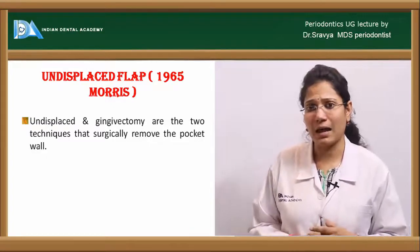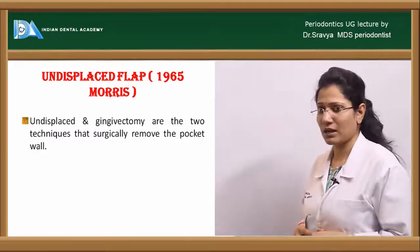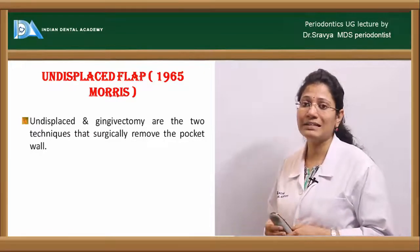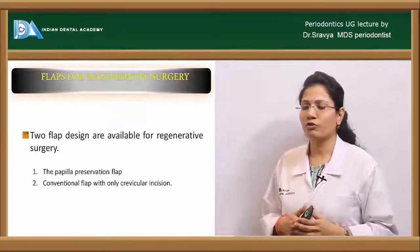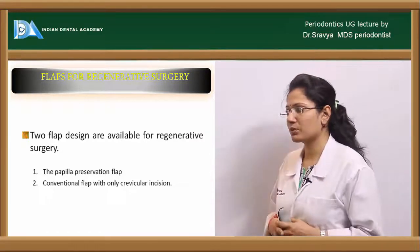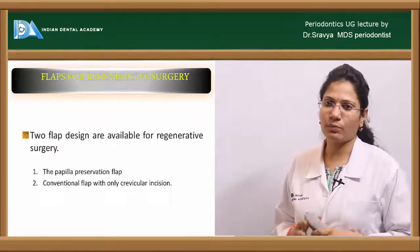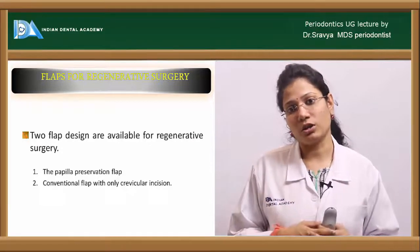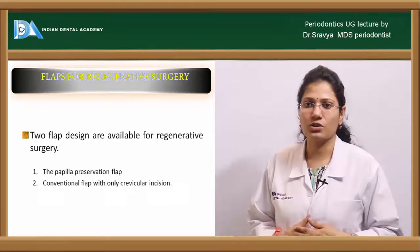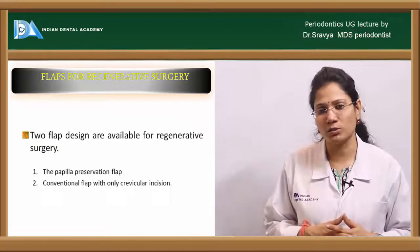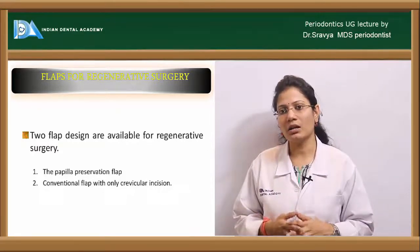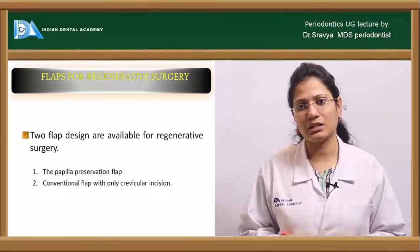The undisplaced flap was given by Morris in 1965. The undisplaced flap and gingivectomy are the two techniques that completely eliminate your pockets. For regenerative techniques, two flap designs are available: the papilla preservation flap and the conventional flap with a crevicular incision such as the Kirkland flap. In regenerative procedures, the goal is to preserve as much tissue as possible to get good approximation of flaps so that the underlying bone graft or membrane does not become exposed.